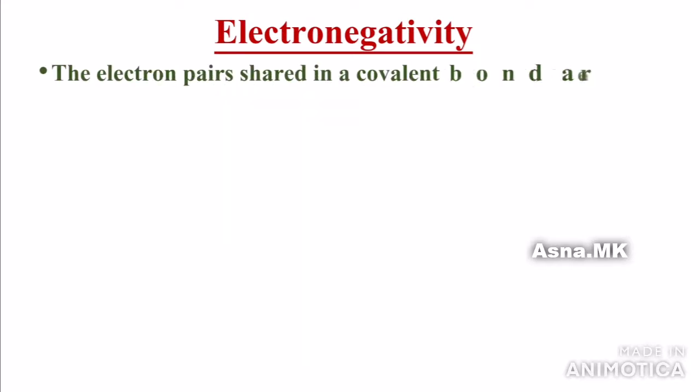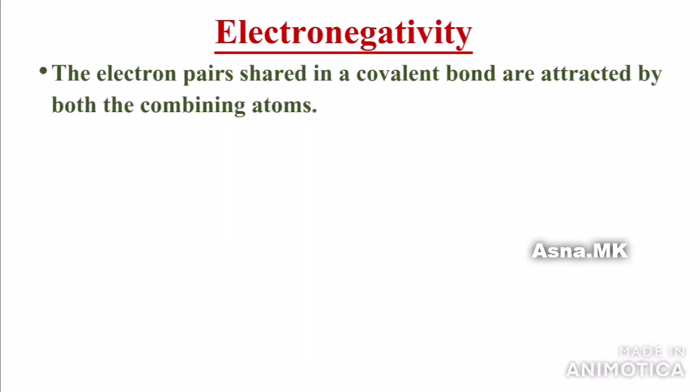The electron pairs shared in a covalent bond are attracted by both the combining atoms. These atoms are in covalent bonds, as seen in HCl — hydrogen and chlorine.